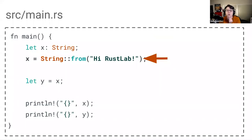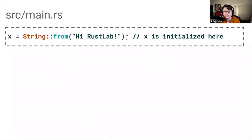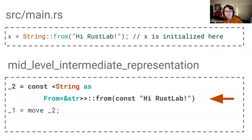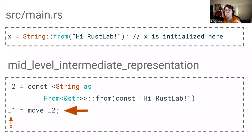Now let's look at the line where we create and assign the 'hi RustLab' string to the variable x. Now that x has a value, it is considered initialized. We create a new place in memory — local underscore two — where we store this 'hi RustLab' string, and then we move the value stored at underscore two to underscore one. Remember, underscore one corresponds to the x variable. So we have created the string in memory and then moved that string to be the value of x.